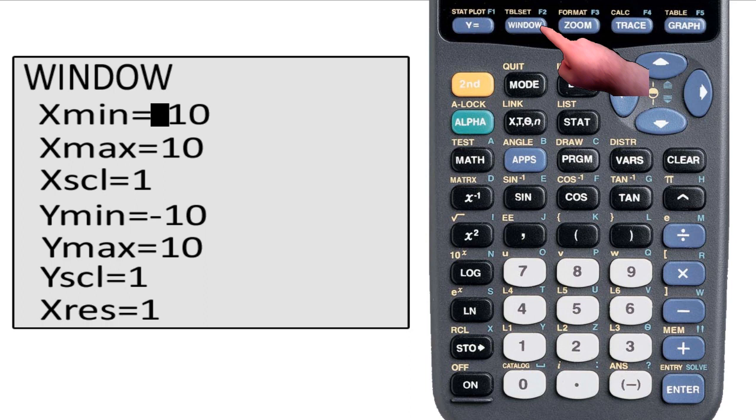Xmin says how far to the left the graph stretches. Xmax says how far to the right. Ymin says how far down. Ymax says how far up. Xscale, Yscale and Xres are at 1. You want to keep them that way. And if they're not at 1, you want to change them to 1.